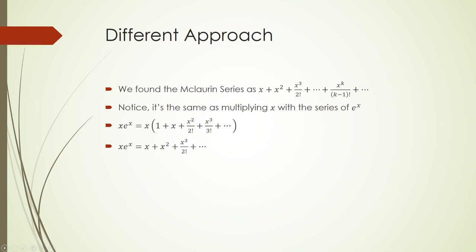Now when I distribute out the x, I get x plus x squared plus x cubed over 2 factorial, which happens to be the same thing that I found in the previous slide. This is not surprising, as a Maclaurin series of a product is a product of the Maclaurin series.